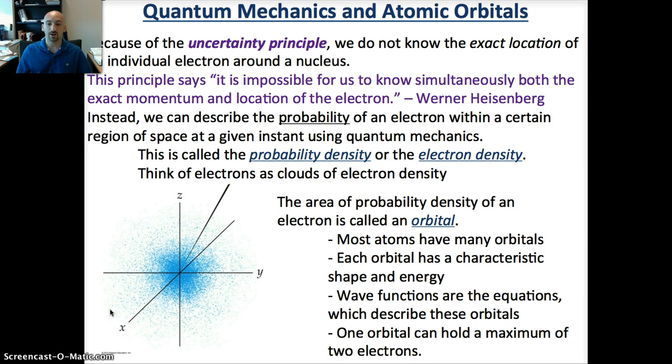However, we can actually describe the probability of an electron within a certain region of space at a given instant using quantum mechanics. This is called the probability density or the electron density. We can think of electrons as clouds of electron density. That's what's shown down here in this bottom left figure - a cloud of electron density, which is the probability that an electron exists within this region.